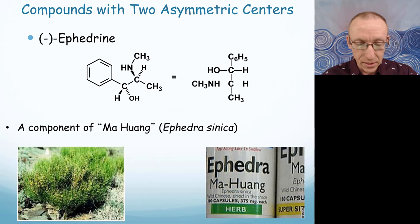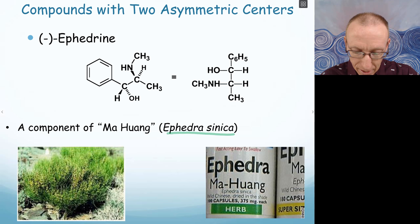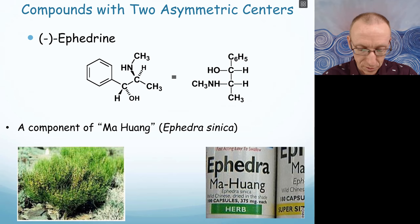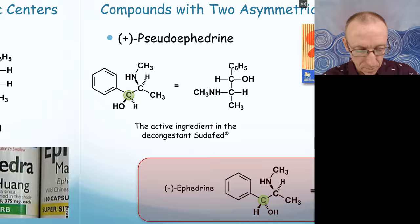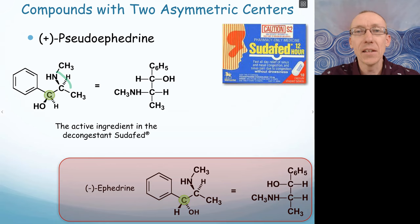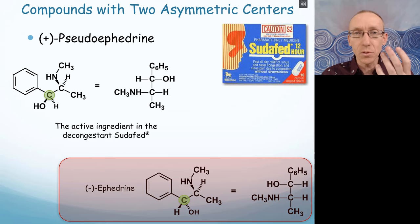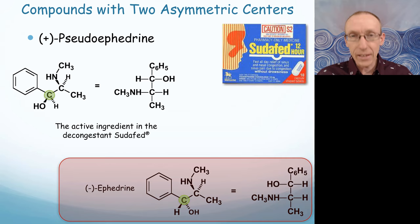Compounds with two chiral centers are quite common in nature, present in things like ephedrine. Ephedrine is abundant from plant sources, including the Chinese herbal plant known as Ephedra sinica, and it's a very common biologically active molecule. Related to ephedrine, there's pseudoephedrine — ephedrine has a down hydroxyl group and an up amino group, while pseudoephedrine has both the hydroxyl group and amino group pointing up. Pseudoephedrine used to be very readily available, sold under the brand name Sudafed, and was commonly used to treat nasal congestion as part of cold and flu remedies.